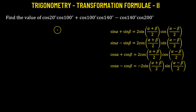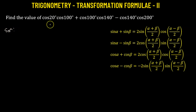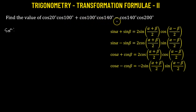In this problem, we need to obtain the value of the given trigonometric expression. We have cosine 20° times cosine 100°, added to cosine 100° times cosine 140°, and we are subtracting cosine 140° times cosine 200°.